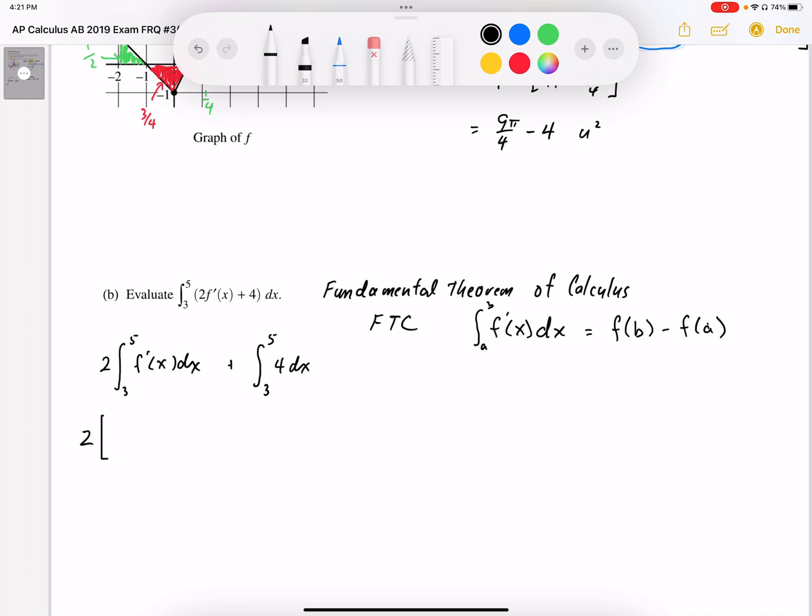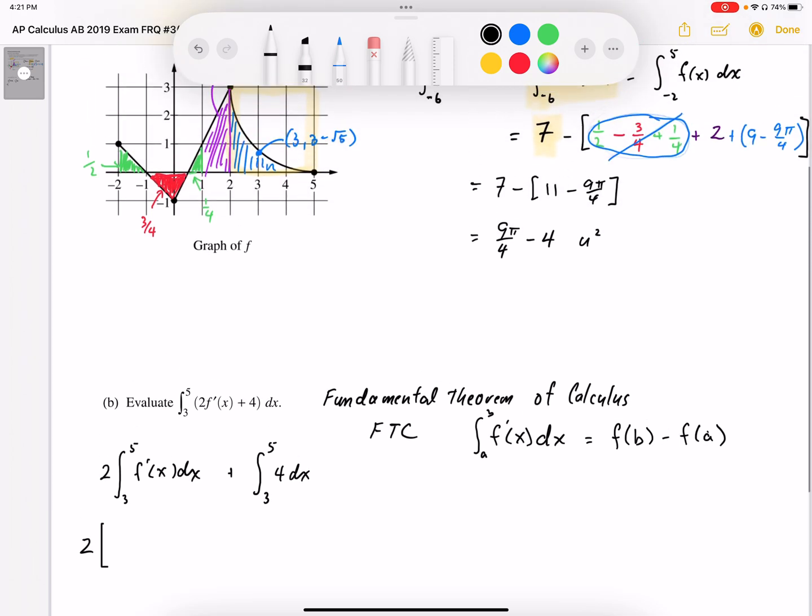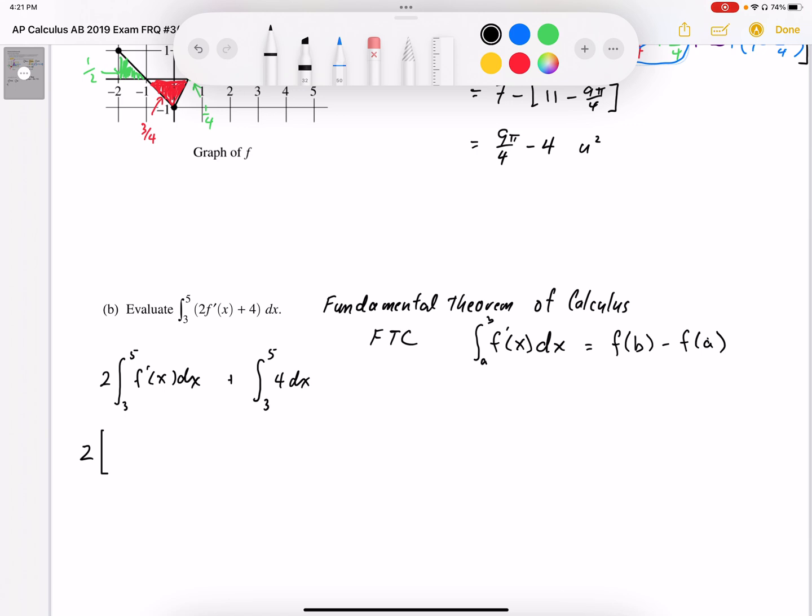We want the area under f', which is the displacement on f. So this is the displacement on f from 3 to 5, which is f(5) minus f(3).